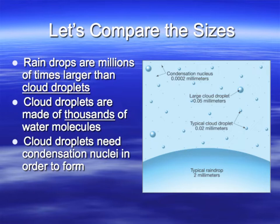This diagram gives you an idea of the scale. Here's the size of a typical raindrop — about two millimeters across — and your typical cloud droplets in comparison are microscopic. Because they are so small, they are buoyant and therefore float in the air.